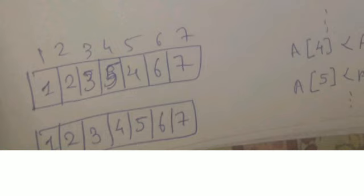So in bubble sort it is a very simple algorithm. You have to check 2 elements at a time from the back side of the array, go on swapping as needed, and you will get the sorted array finally. This is how you can sort the array. Thank you for listening.